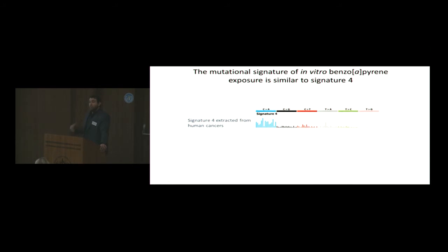The third and probably most convincing evidence is, if you believe something is caused by a specific agent, the reasonable thing to do is to take that carcinogen, expose cells or expose mouse models, sequence it, and see whether one is able to reproduce that mutation pattern. You see here, that's exactly what was done by Dave Phillips' lab in King's College, with benzoapirin. What you see here is signature four, extracted from human cancers.